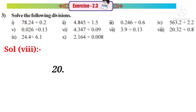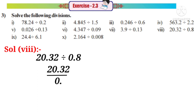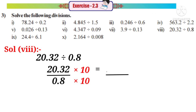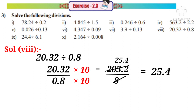Solution 8: 20.32 divided by 0.8, that means 20.32 by 0.8. Observe that there is only one decimal in the denominator. So we have to multiply with a number which has only one zero after 1, that is by 10. On multiplication, the decimal point will shift right side after one digit in the numerator. So it becomes 203.2 by the denominator becomes 8. On simplification by 8, the answer is 25.4.